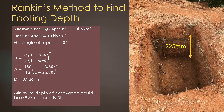The most widely used method to find the depth of footing is the Rankine method. The equation is: D = (P / γ) × ((1 − sin θ) / (1 + sin θ))², where P is the allowable bearing capacity or applied pressure (whichever is lesser), γ is the density of soil, and θ is the angle of repose of that particular soil. Using this equation you can calculate the minimum depth of the footing.